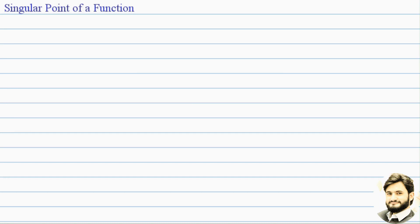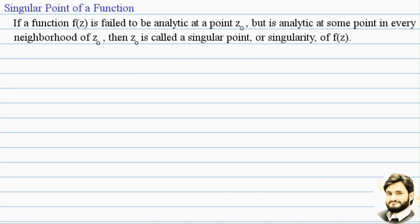Singular point of a function: If a function f(z) fails to be analytic at a point z₀, but is analytic at some point in every neighborhood of z₀, then the point z₀ is called a singular point or singularity of the function f(z).